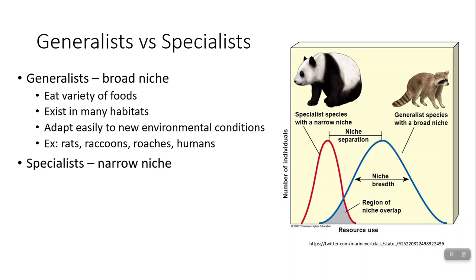This is very different from a specialist. A specialist has a very narrow niche and is specialized to live in a specific environment — they may have a very limited diet. As you can see in this image, pandas only eat bamboo. They don't eat meat, they don't eat other plants, and in fact during different seasons they eat different parts of the bamboo. They are extremely specialized to their habitat, so you can't take a panda and move it to, say, Mongolia and expect it to survive. You probably couldn't move a panda 100 miles from its current habitat and expect it to survive.